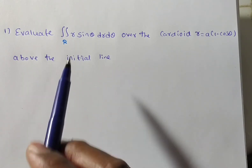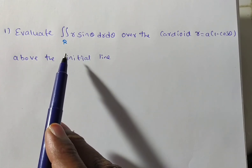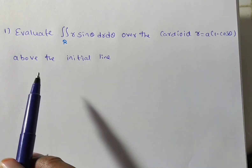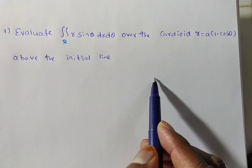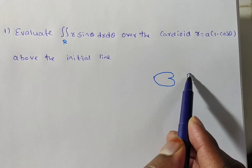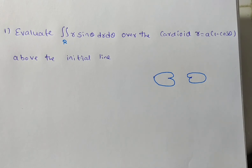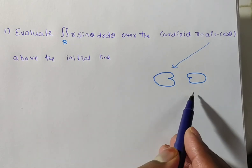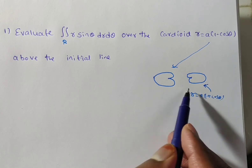This is a double integral and the limits are not directly given, so we need to find the limits for this region. The region is the cardioid above the initial line. We have two types of cardioids — r = a(1 - cos θ) is one shape, and r = a(1 + cos θ) is the opposite shape.